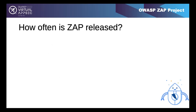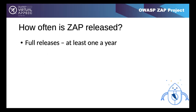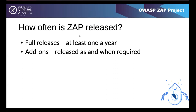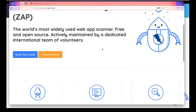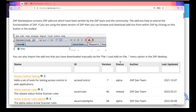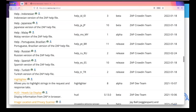ZAP tries to do a full release at least once a year. ZAP has a plugin architecture, meaning add-ons can be updated whenever needed, but the core only updates with full releases. They aim for twice a year but haven't been succeeding well - the last release was 2.11.1 towards the end of last year. Add-ons are released as and when required. The marketplace is accessible within ZAP itself, where you can install all these add-ons directly.